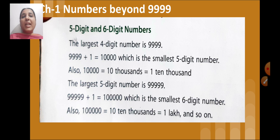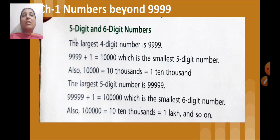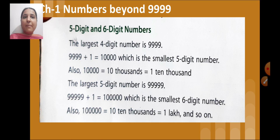When we add one to 9999 we get 10,000, which is the smallest five-digit number. 10,000 can also be read as 1 ten-thousand. Similarly, 20,000 can be read as 2 ten-thousands, and 50,000 can be read as 5 ten-thousands, and so on.